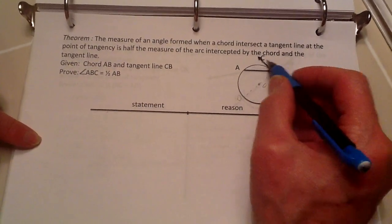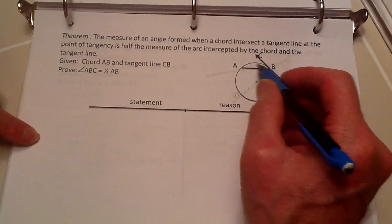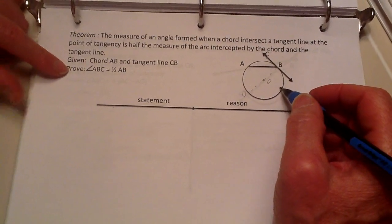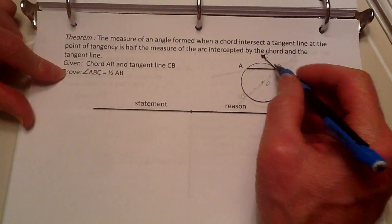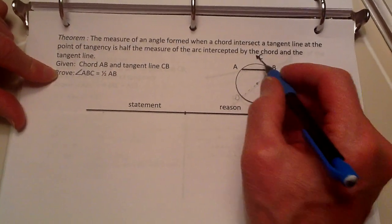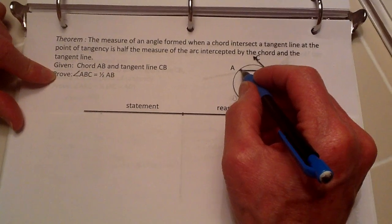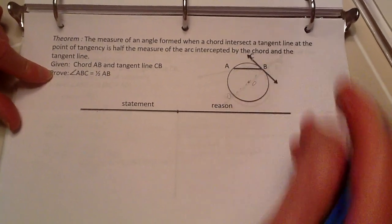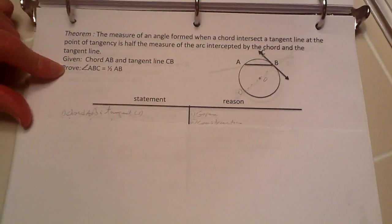Here is the chord, here is the tangent line, and of course here is the circle. And what they are saying is that this angle here of ABC is going to be equal to one half of the measure of this arc here. So what do we do to prove that?